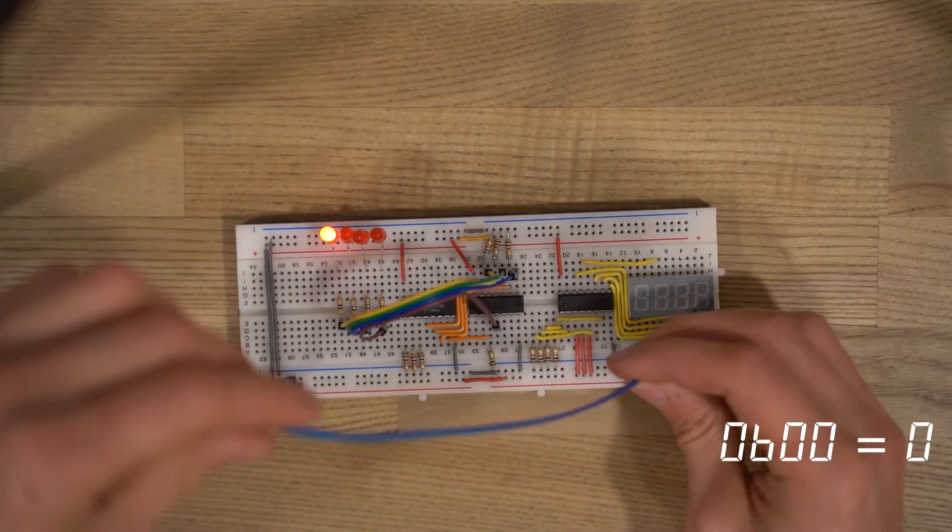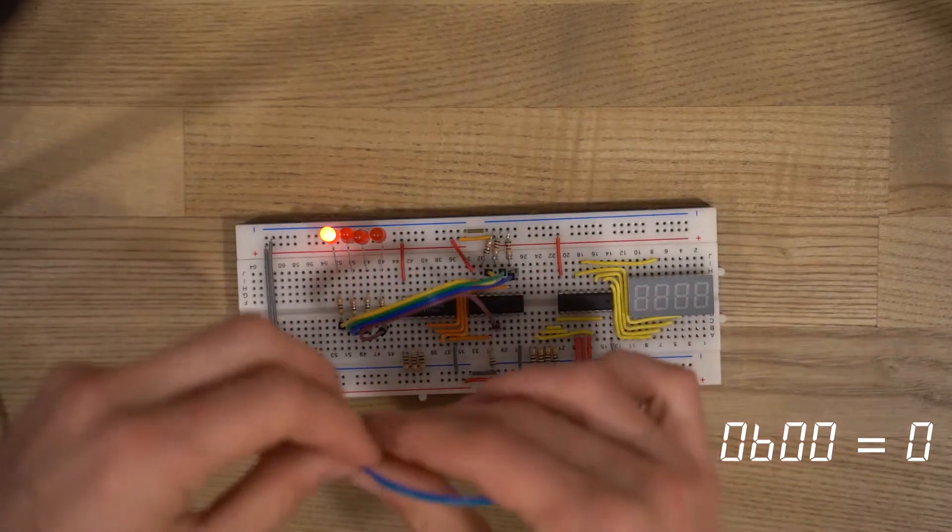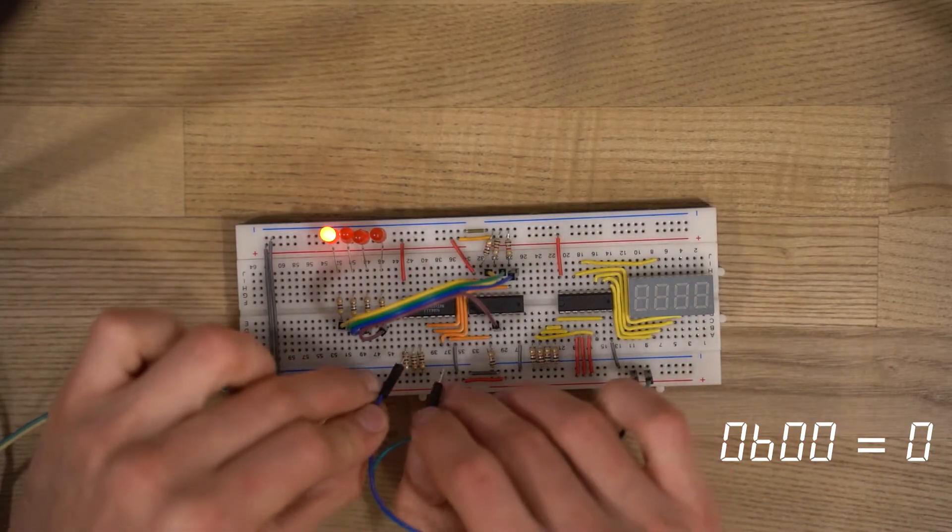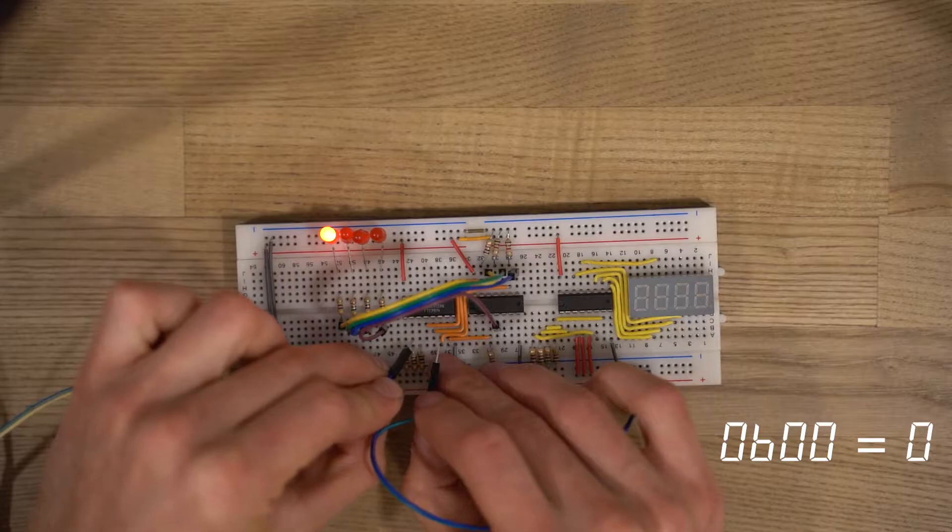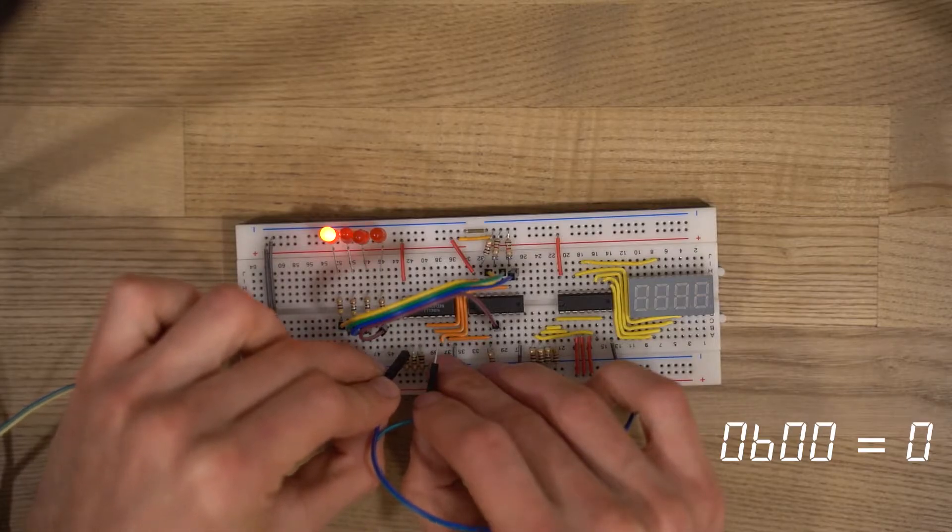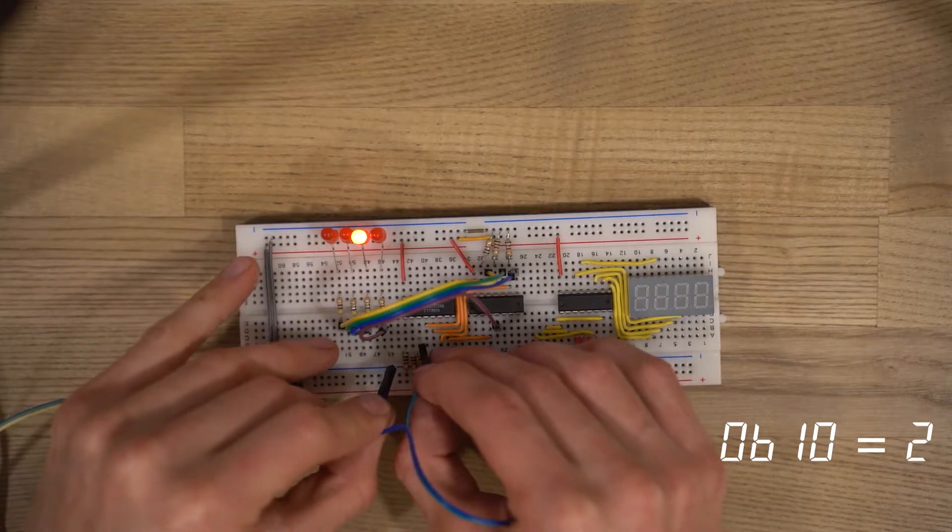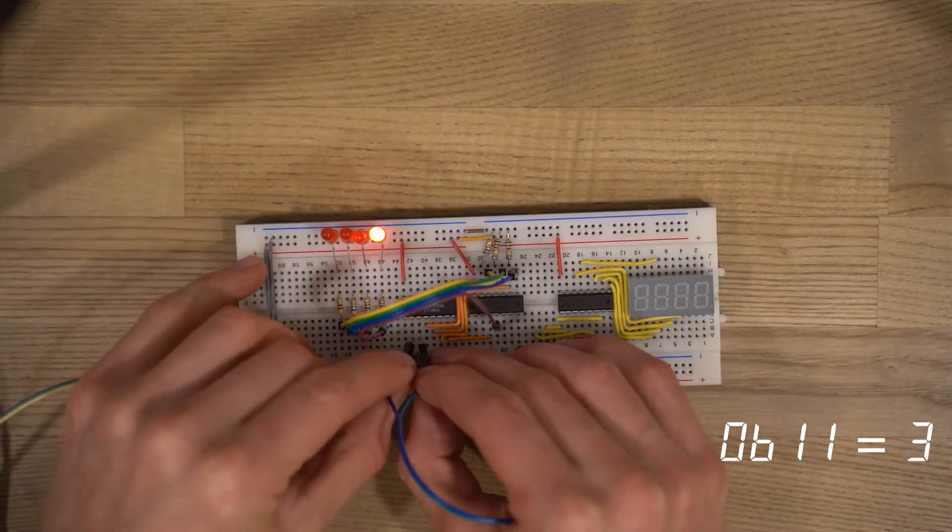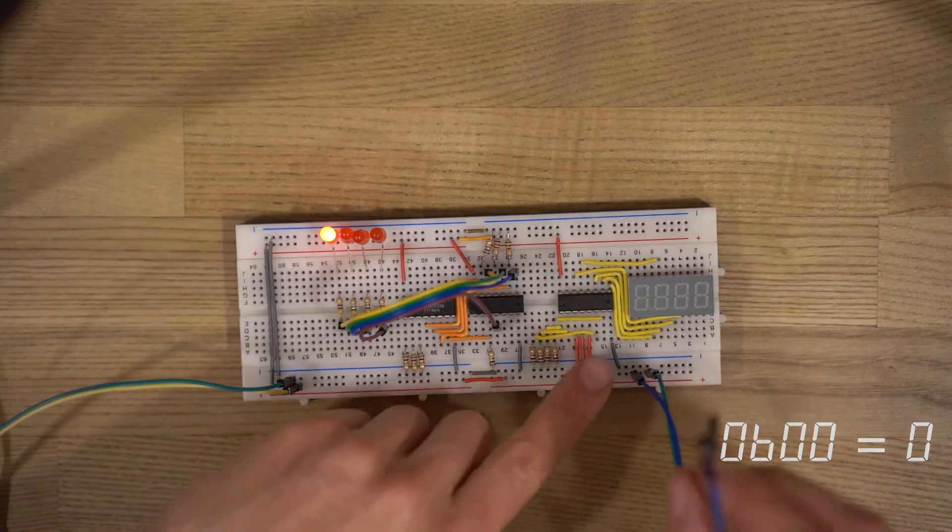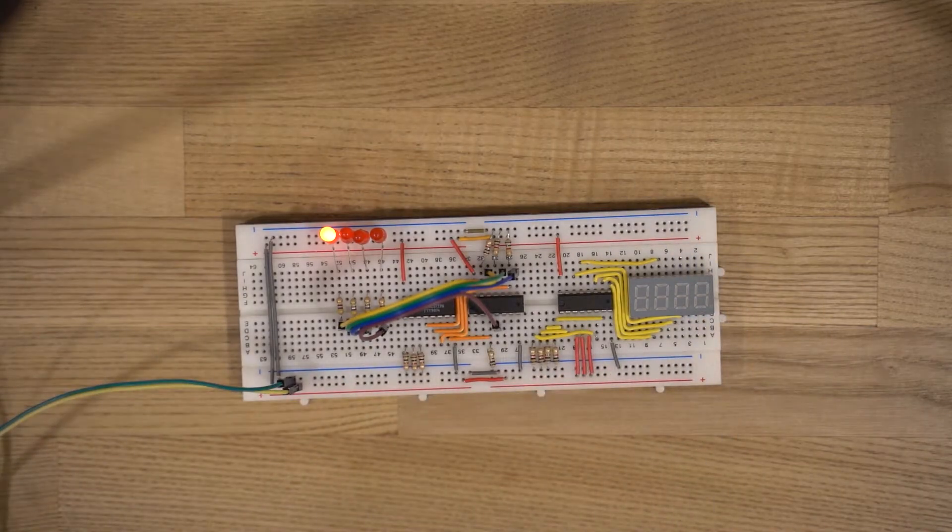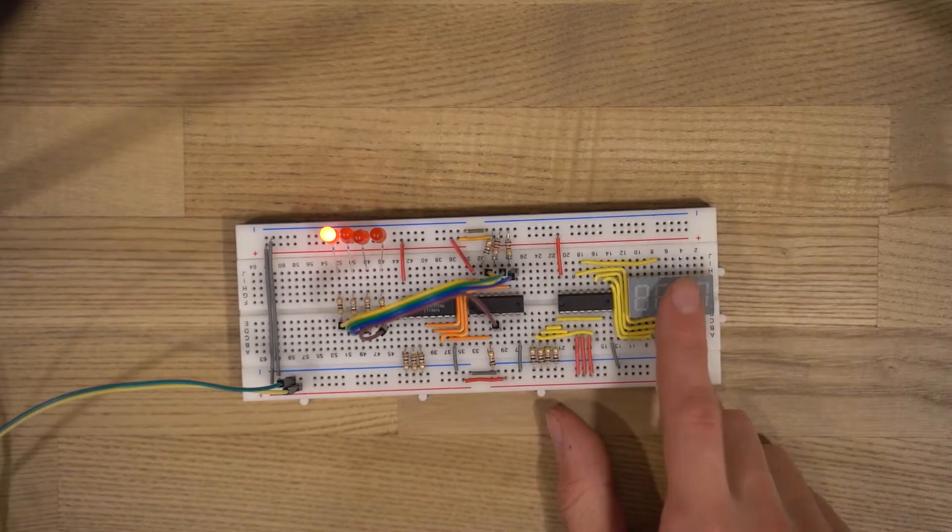So the first combination works perfectly, let's just test the others. If I give it 1, alright. If I give it 2, nice. And 3, here we go. Well, our circuit is almost finished, now it's just time to connect these signals to our 7-segment display.